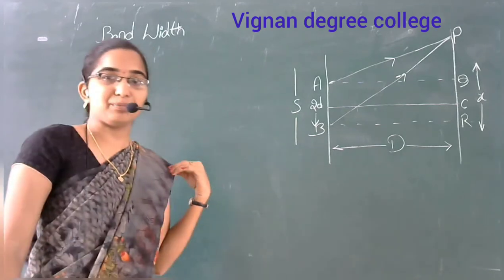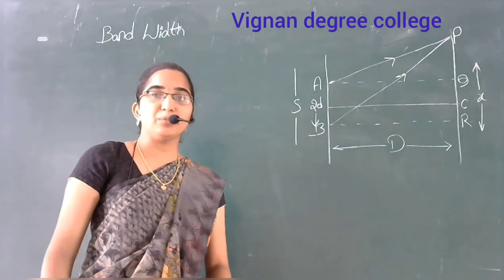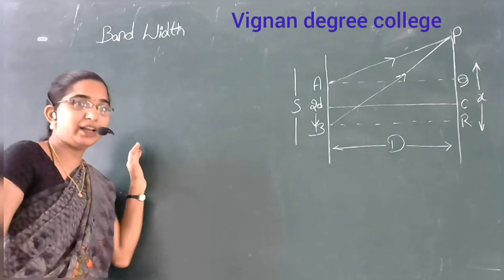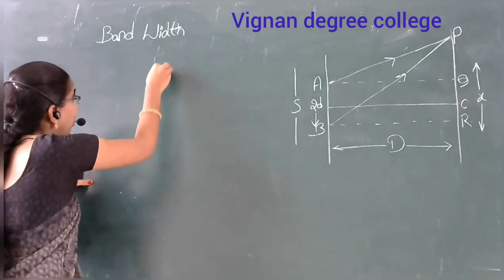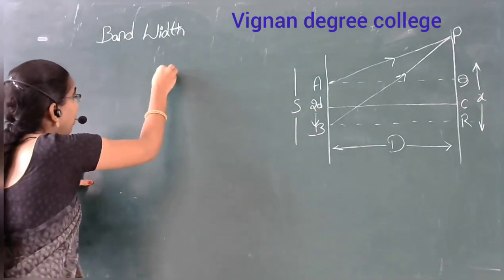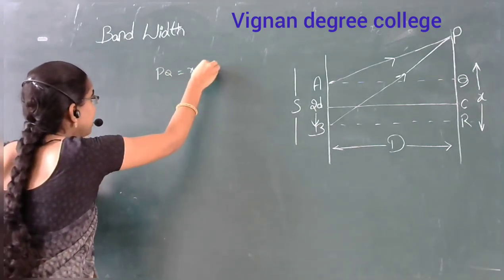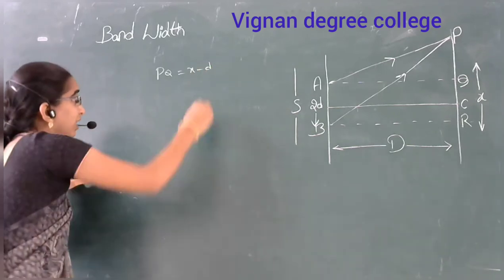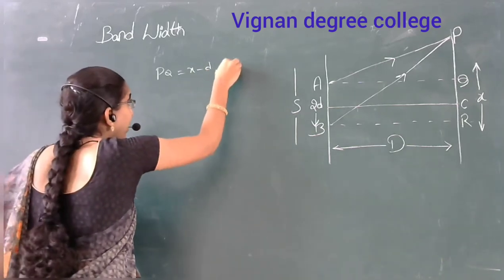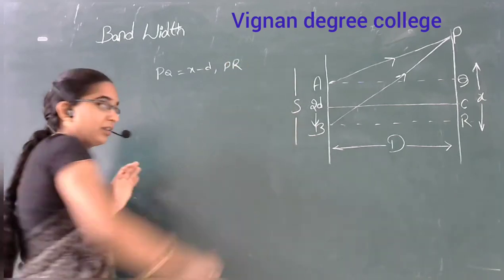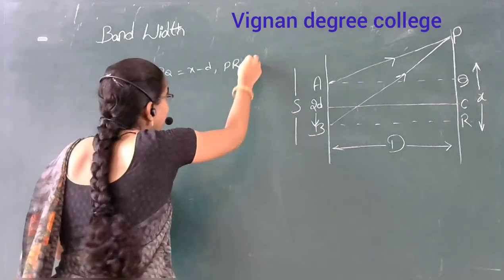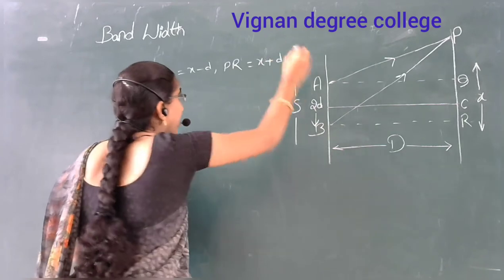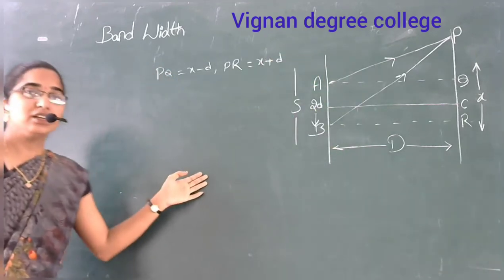From the diagram, PC is equal to x minus d, and PR is equal to x plus d.